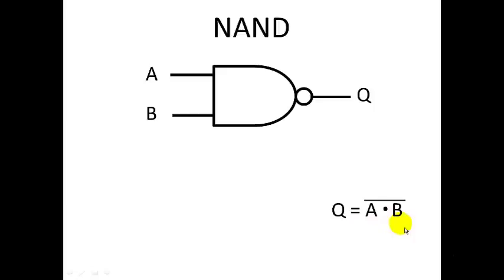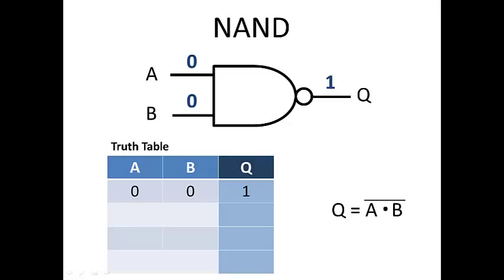So in terms of our algebraic notation, Q, our output, is equal to A dot B, which means A AND B, and then the bar over it, which means NOT, or an inversion of that. So we'll cycle through the different inputs and show the truth table, which shows you what output you'll get for each input.